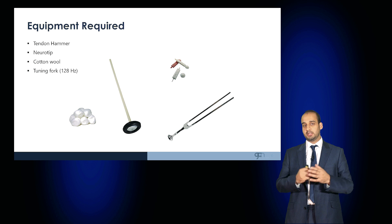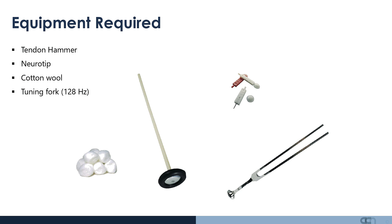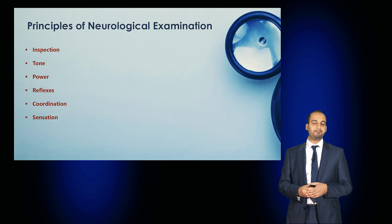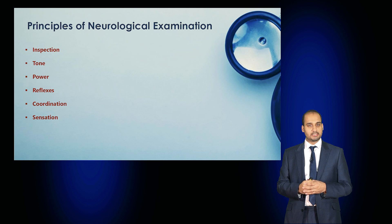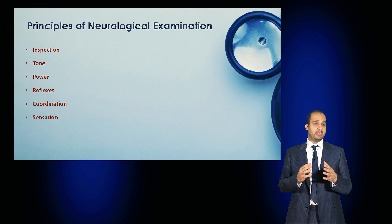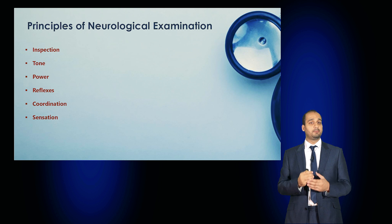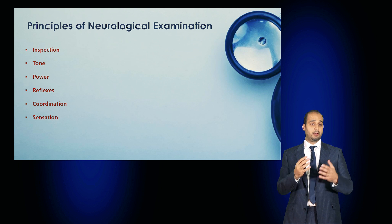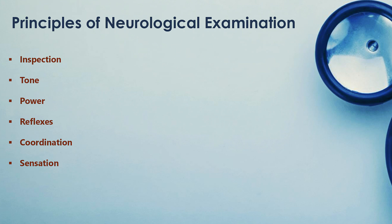Ensure that you have the required equipment, which includes a tendon hammer, a neuro tip, a tuning fork, as well as cotton wool. The principles of the neurological examination involve a thorough inspection followed by examination of tone, power, reflexes, coordination, sensation and then gait.